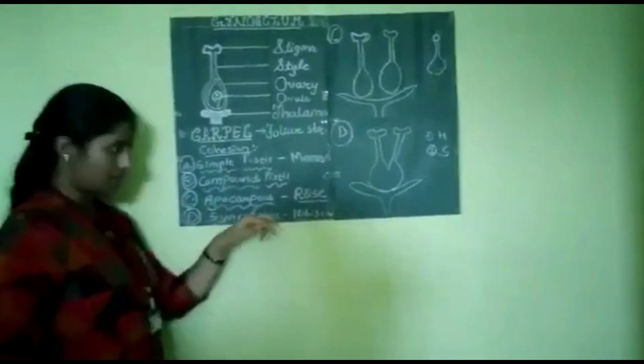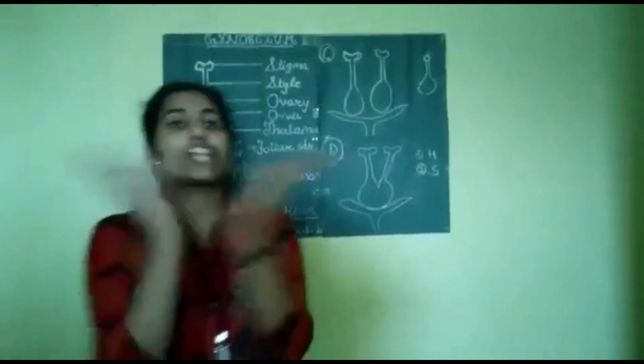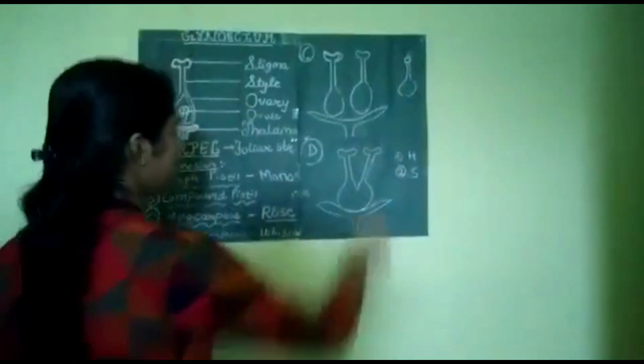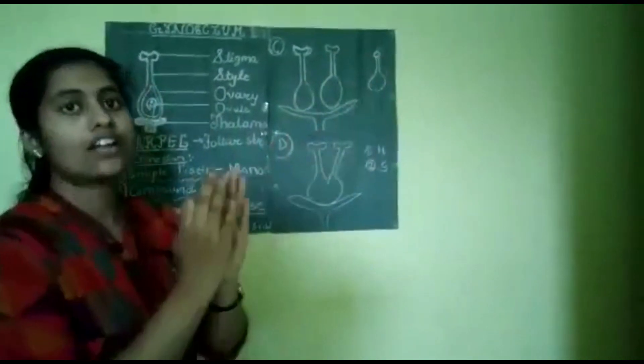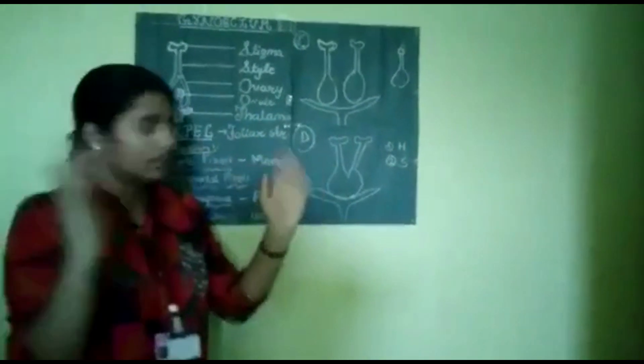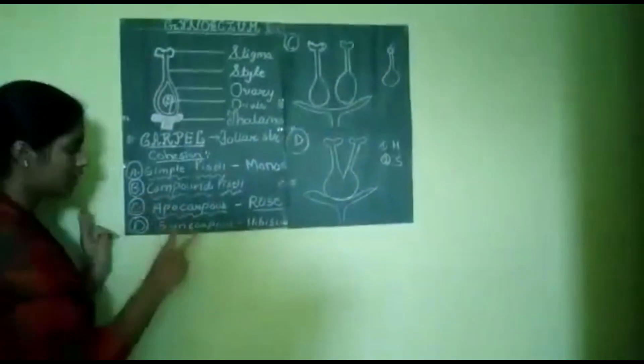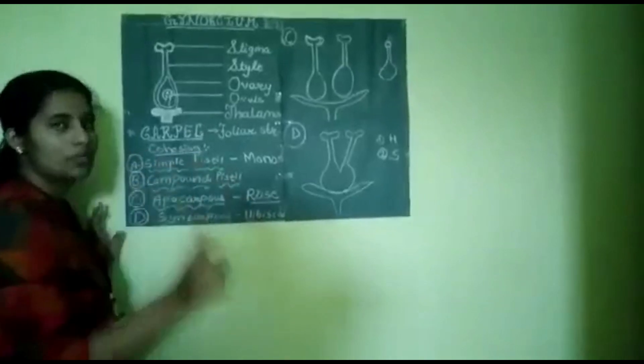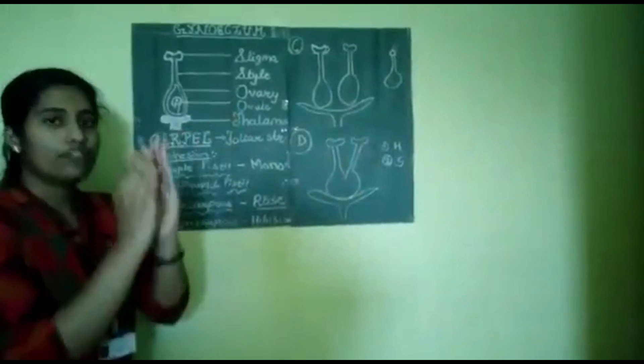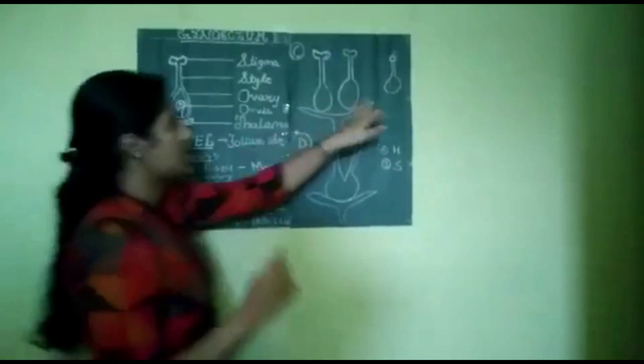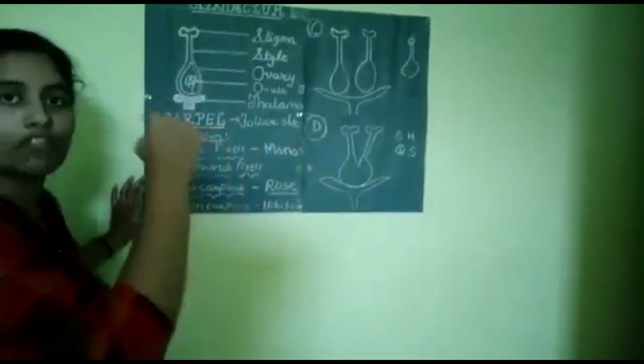Next one, apocarpous. Apocarpous type of pistil are those pistil in which the carpels are free. This is first carpel. This is another carpel. These carpels are not fused. They are free. Free in the sense they are apo. Apo means free. Apocarpous, two different words are joined here. Apo means free, carpus means carpel or the pistil, in which the pistils are free, they are not fused. That is apocarpous pistil. For example, rose. Rose is having apocarpous type of pistil.